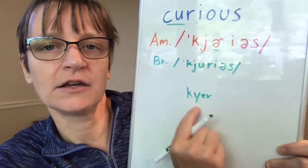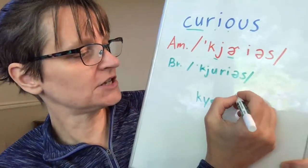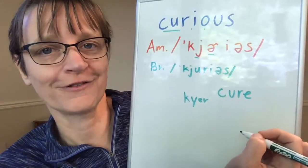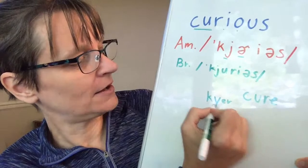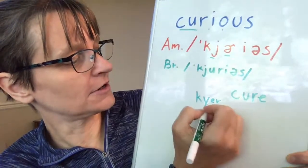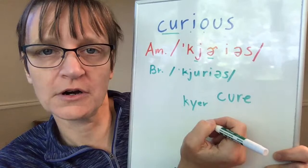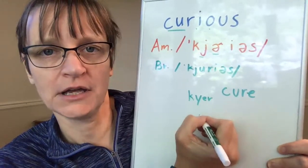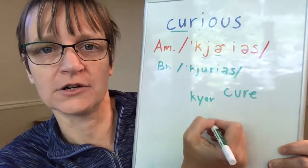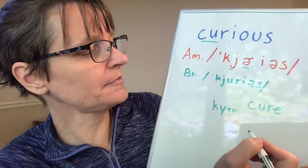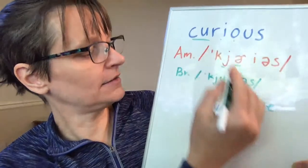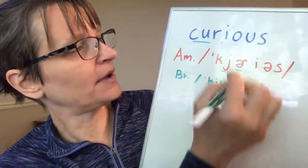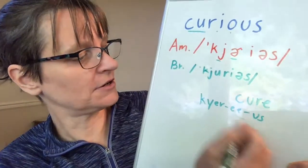So it sounds like 'cure, cure' — it's actually very similar to the word 'cure,' like a cure for the coronavirus disease. So we're going to start with our 'cure.' If you have trouble with that, try to start just with 'er' and then add your Y sound: 'er... ur... cure, cure.' And then our letter I says the E sound in this word: 'cure-E.' And finally we have a schwa and an S sound: 'curious' — long, short, short — 'curious.'